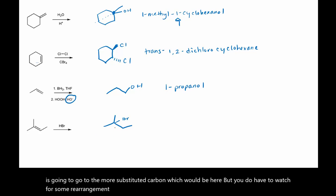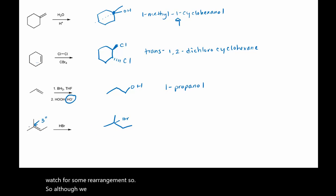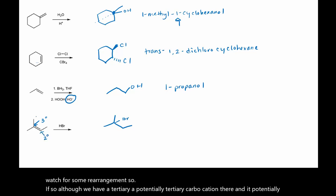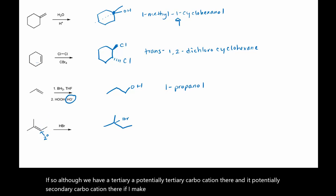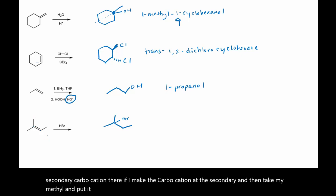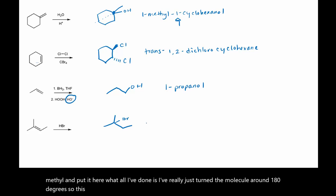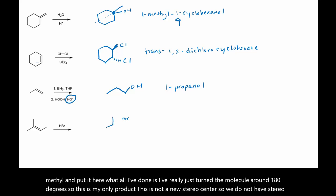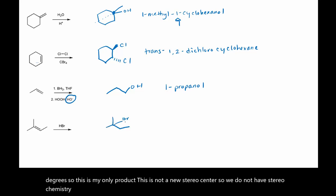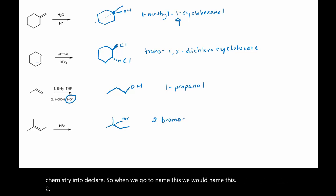Although we have a potentially tertiary carbocation there and a potentially secondary carbocation there, if I make the carbocation at the secondary and then take my methyl and put it here, all I've done is really just turned the molecule around 180 degrees. So this is my only product. This is not a new stereocenter, so we do not have stereochemistry to declare. When we go to name this, we would name this 2-bromo-2-methylbutane.